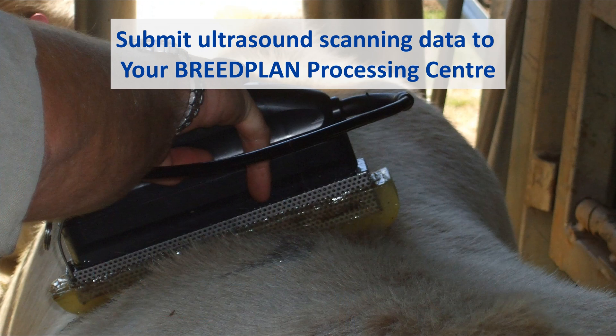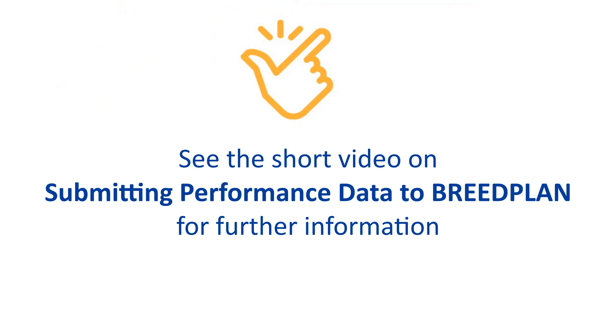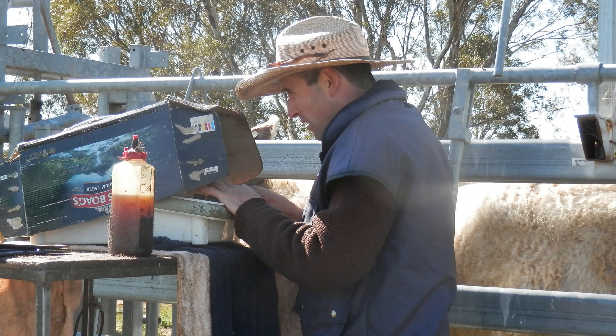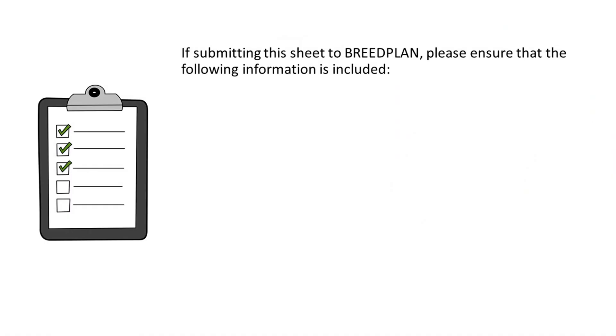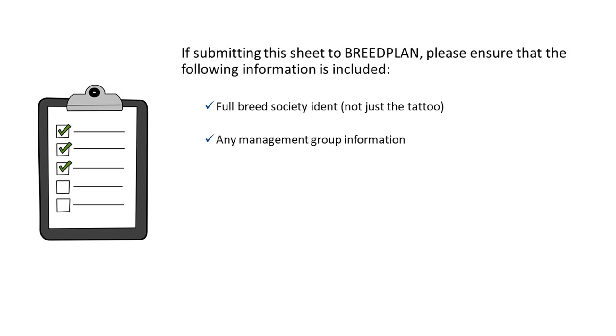Ultrasound scan data should be submitted to your Breedplan processing centre. These can be submitted using any of the available Breedplan submission methods, as outlined in the short video on submitting performance data to Breedplan. Some beef producers submit their ultrasound scanning data using the recording sheet completed by the scanner at the time of scanning. If submitting the sheet to Breedplan, please ensure that the full Breed Society ident — and not just the tattoo — is provided for each animal and that any management group information is noted.